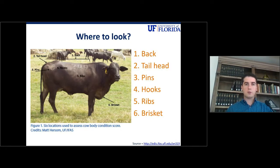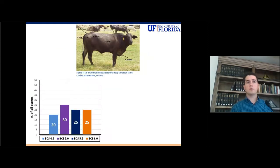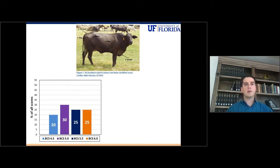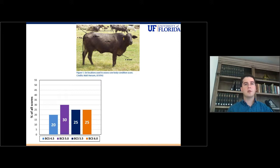Now, probably a lot of you are familiar with body condition score at some level, and you know that body condition score is a subjective measurement. That means that the same cow can be scored slightly differently between two people. So you might have a slightly different body condition score than your neighbor for the same cow.